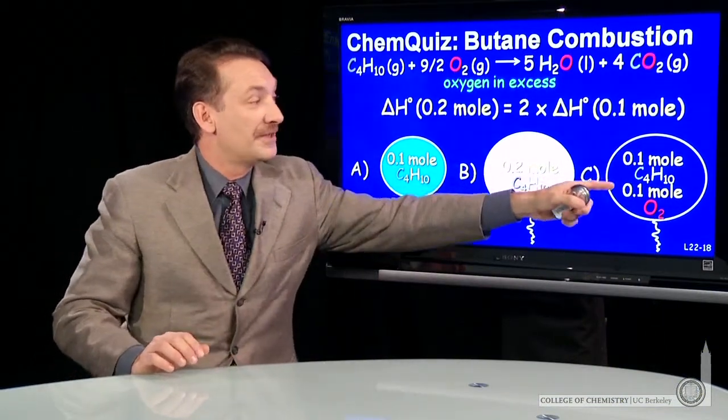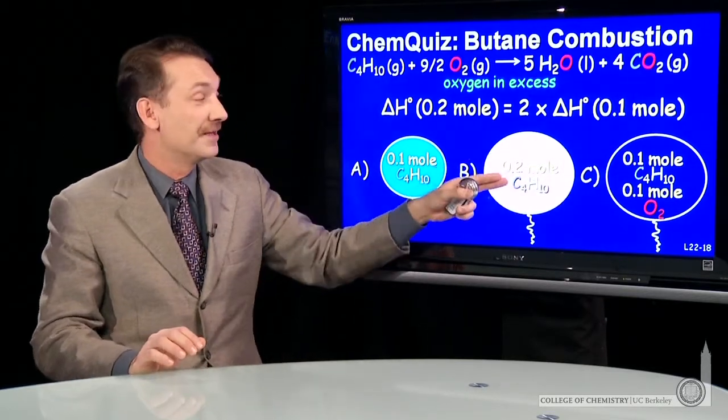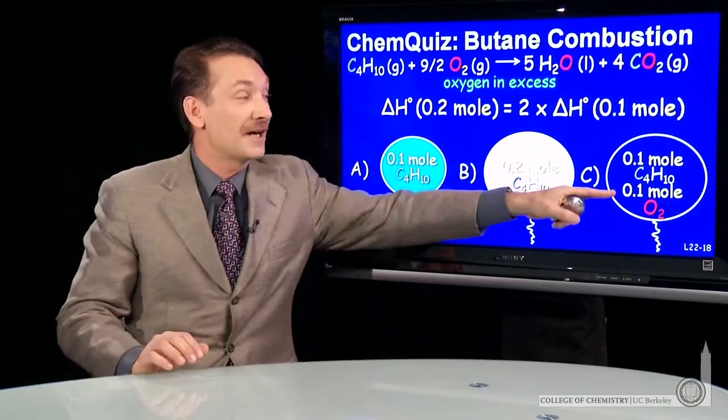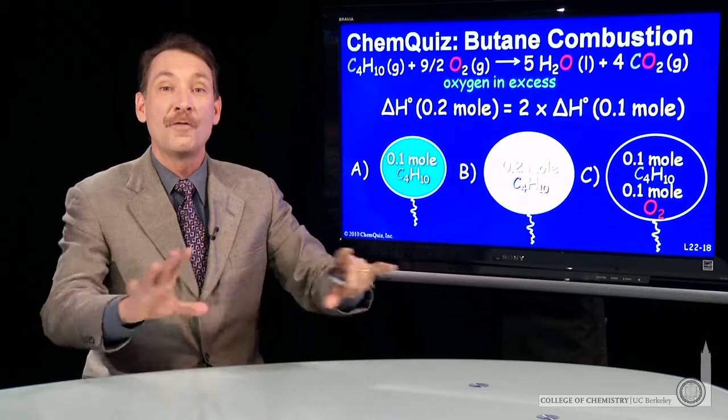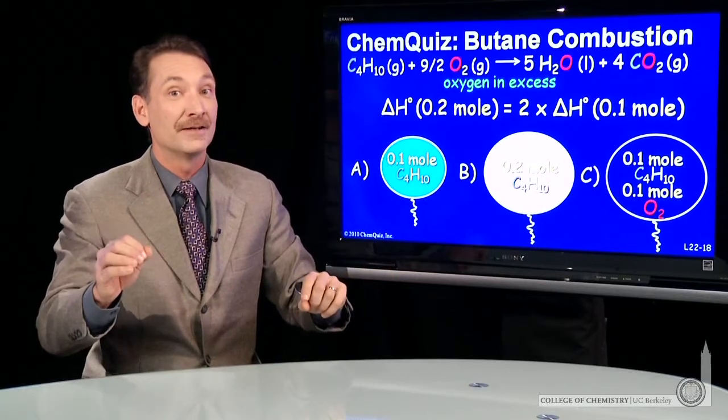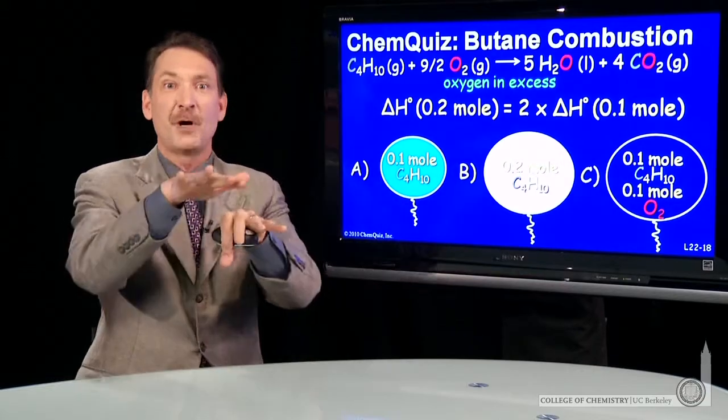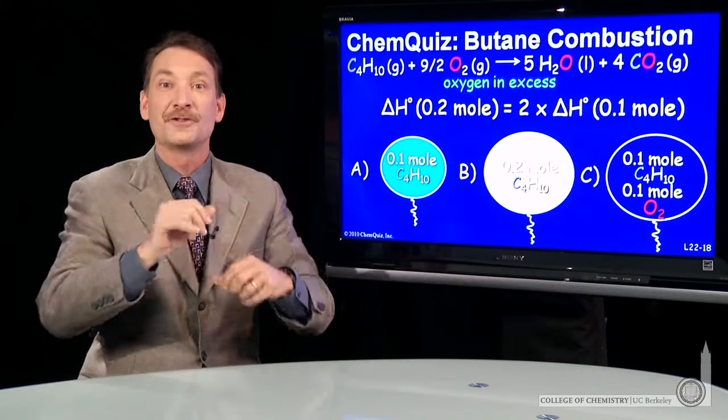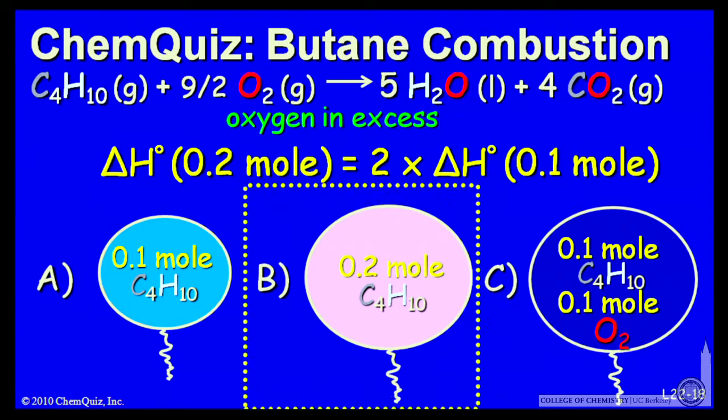Now, the 0.1 mole here will release energy more rapidly than the 0.2 mole here because the oxygen is already mixed. But the speed of the reaction and the overall energy release are independent. I can release a lot of energy over a long time or release a small amount of energy quickly. Those are two different things. In this case, the most energy released is from balloon B with 0.2 mole of butane.